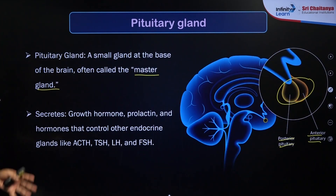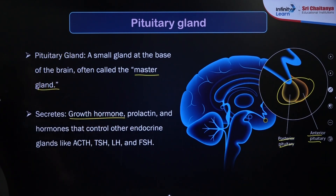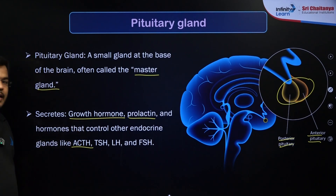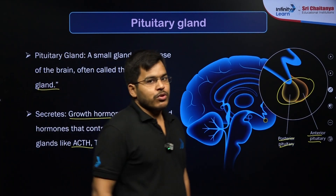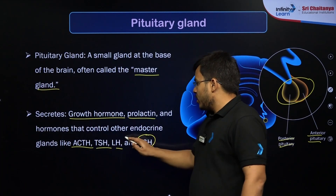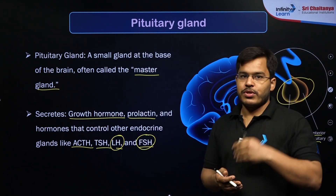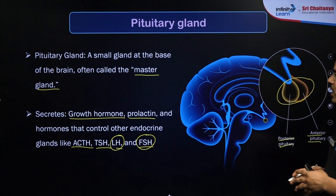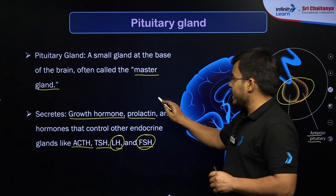The hormones released by the anterior pituitary include: growth hormone (GH), which helps in body growth; prolactin, which helps in milk release; ACTH (adrenocorticotropic hormone), which controls the adrenal gland; TSH (thyroid stimulating hormone), which controls the thyroid gland; and LH (luteinizing hormone) and FSH (follicle stimulating hormone), which control the gonads — testes and ovary — in the release of testosterone, estrogen, and progesterone.